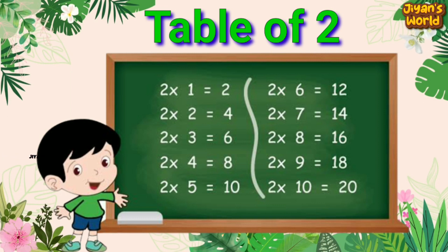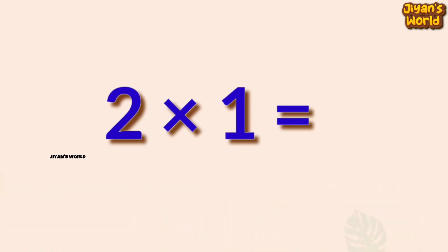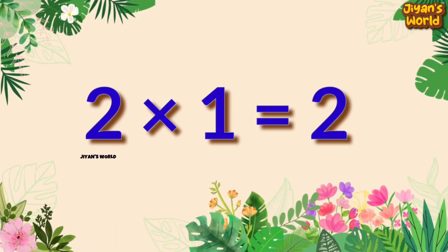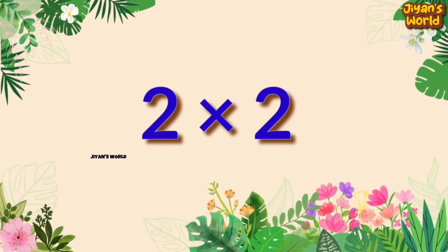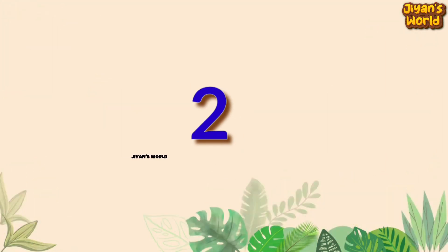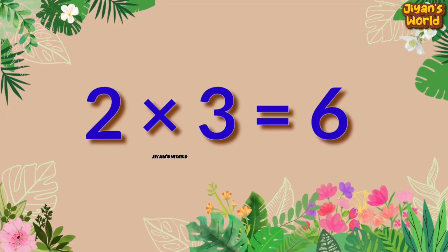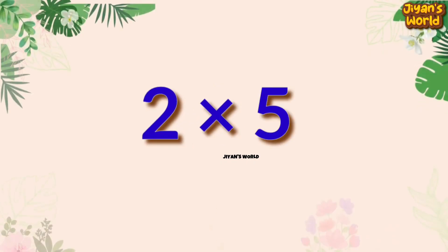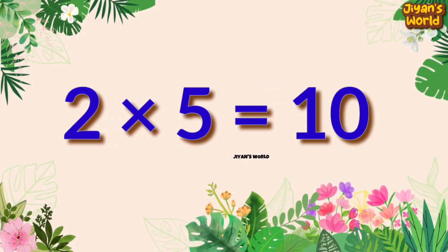So let's start. 2 1s are 2, 2 2s are 4, 2 3s are 6, 2 4s are 8, 2 5s are 10.